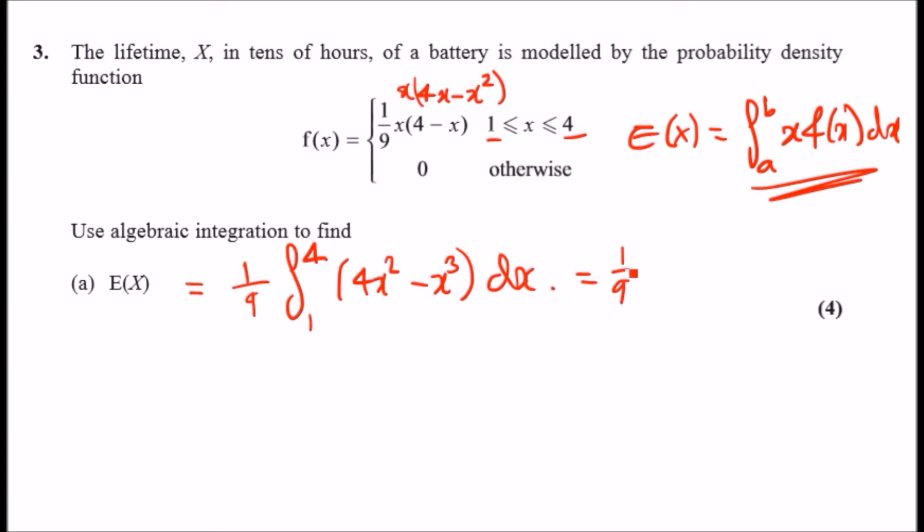Integrating this, you should get 4x cubed over 3 minus x to the power 4 over 4. And then you just evaluate from 1 to 4. Yeah, and that's really it. And then when you do that, so you've got 1 over 9.